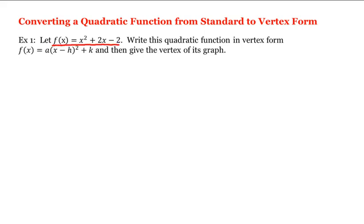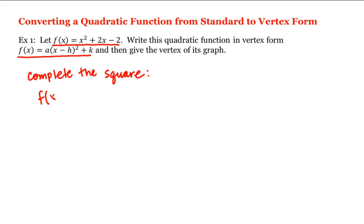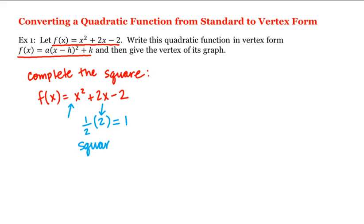Our function is written in standard form. In order to convert a quadratic function from standard form into vertex form, we complete the square. Starting with f(x) = x² + 2x - 2, the first step is to make sure the coefficient of the squared term is 1, which it is here. Then we take one-half the coefficient of x, which is 2, giving us 1, and then we square this: 1² = 1.